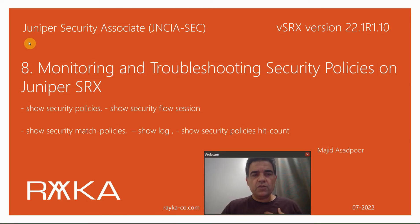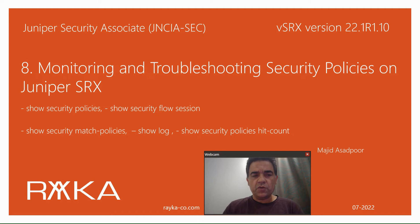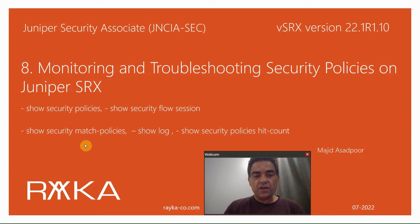Welcome to another video of the Juniper Security Associate Course. In the previous section, we learned how to configure security policies on a Juniper SRX device to control traffic between zones. Now it's critical to monitor and troubleshoot connectivity over security policies, especially when there is a connectivity problem. In this section, we will learn five very practical and handy monitoring and troubleshooting commands for security policies.